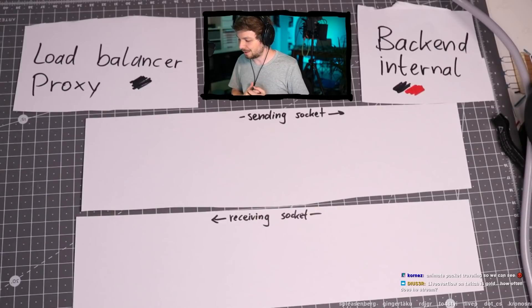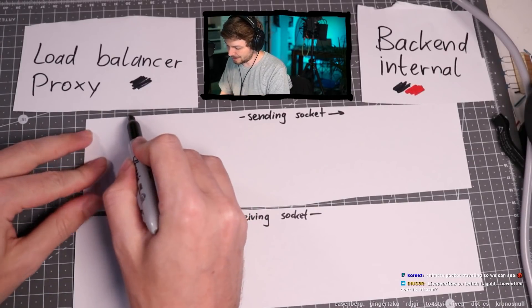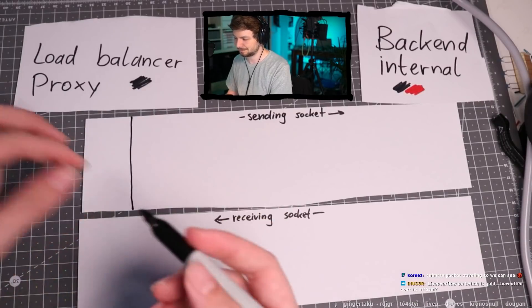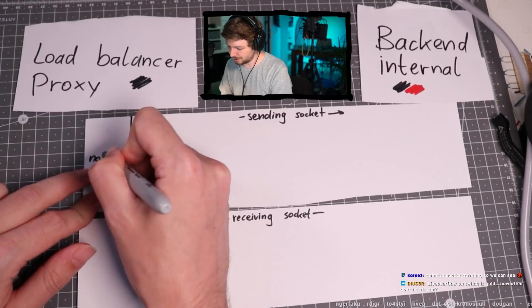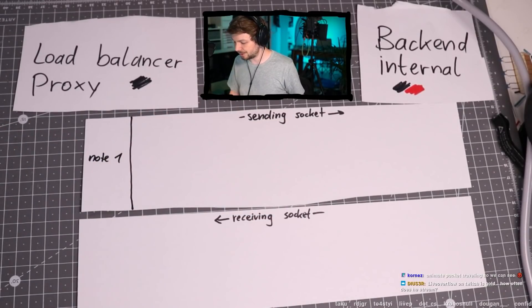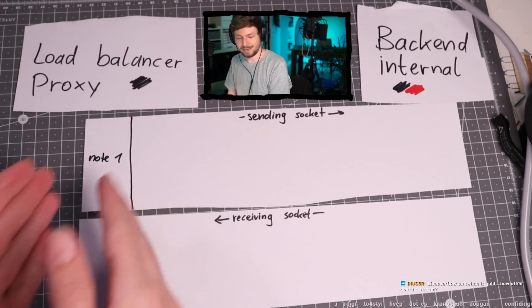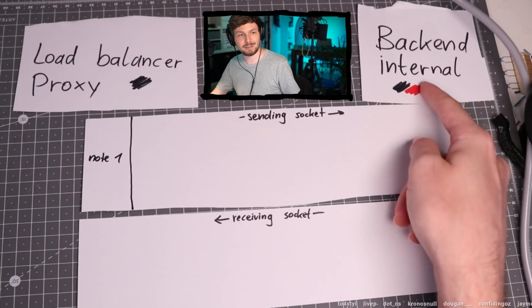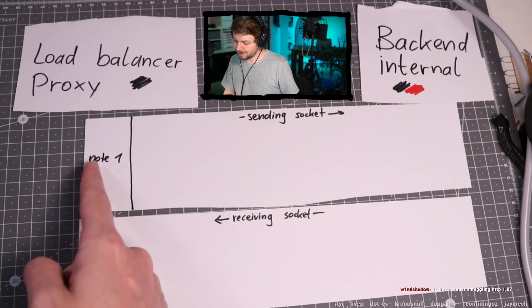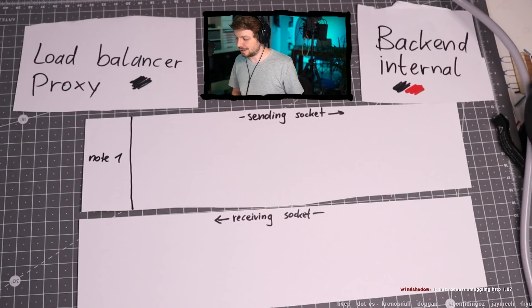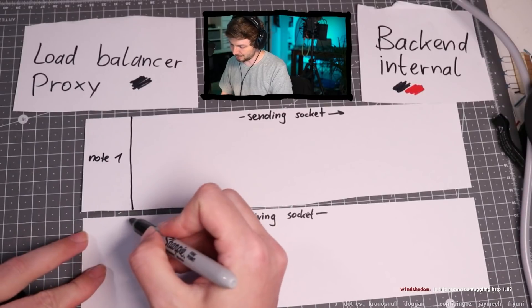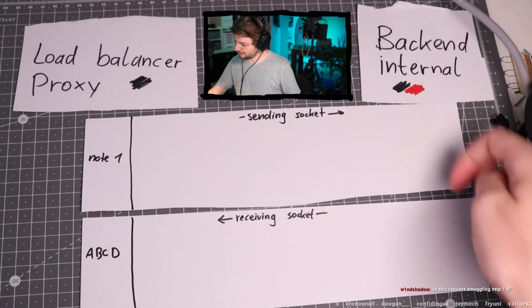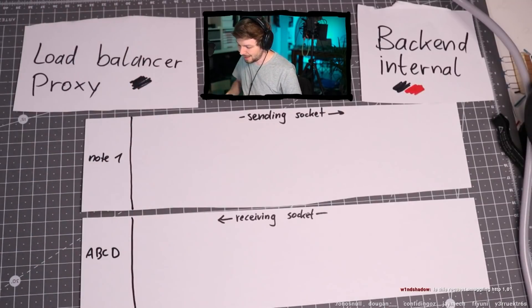In this paper example, let's say requests are separated by a line. Each request is separated by a line. So let's say we send a request here — we say we want node number one. The load balancer writes 'I want node number one' and draws a line to indicate the end of this request. The backend reads this data, reads 'node one,' sees the line, and gives the content back — responding with content A, B, C, D. It returns the node, writes A, B, C, D, and indicates with a line that the end is done.